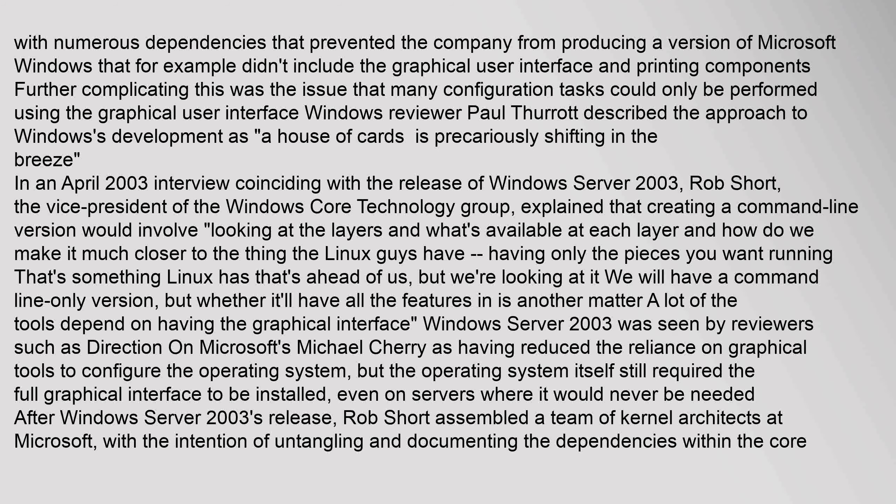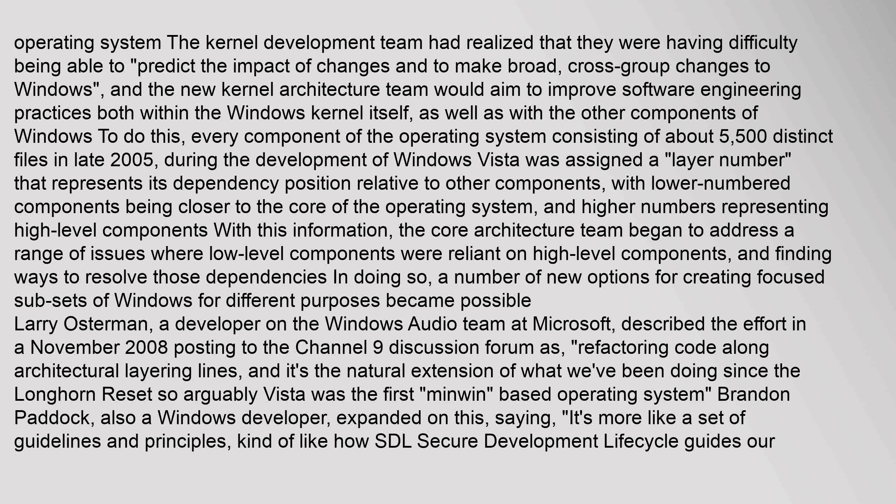After Windows Server 2003's release, Rob Short assembled a team of kernel architects at Microsoft with the intention of untangling and documenting the dependencies within the core operating system. The kernel development team had realized they were having difficulty predicting the impact of changes and making broad, cross-group changes to Windows. The new kernel architecture team would aim to improve software engineering practices both within the Windows kernel itself, as well as with the other components of Windows.